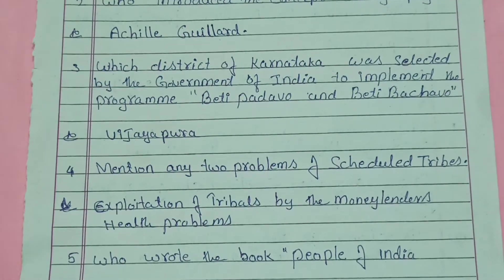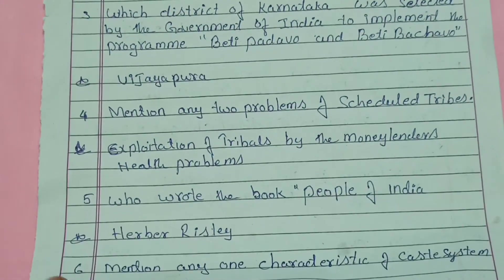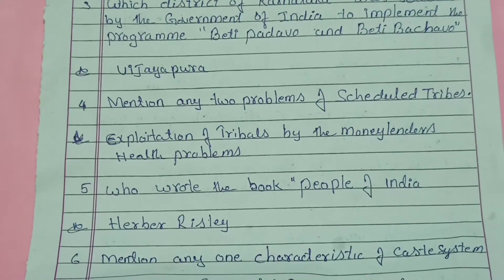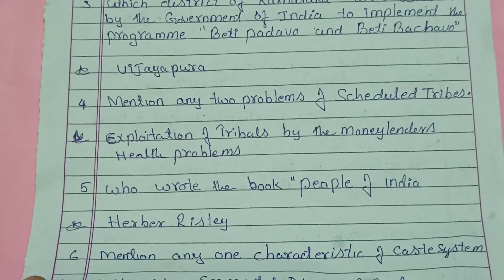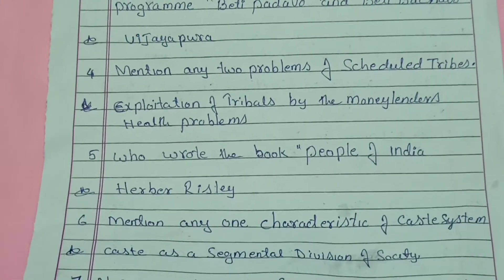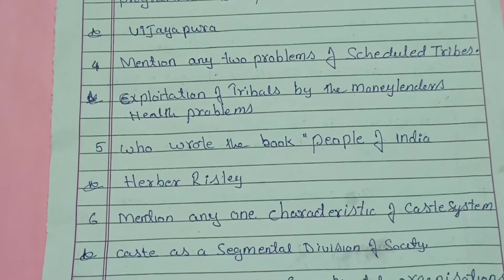The answer is Vijayapura district of Karnataka. Mention any two problems of scheduled tribes: exploitation of tribals by moneylenders, health problems, economic problems, and social problems — you have to write any two problems here. Who wrote the book 'People of India'?